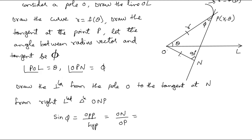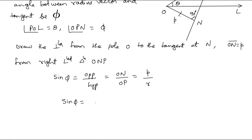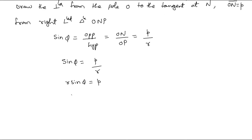ON is the length of the perpendicular from the pole to the tangent. Let the length of this perpendicular be small p, so ON = p. And OP is the radius vector R. Therefore, sin φ = p / R, or cross-multiplying, R sin φ = p. So p = R sin φ.